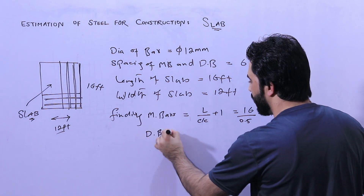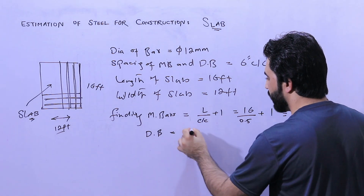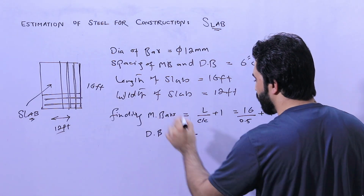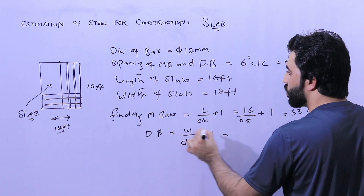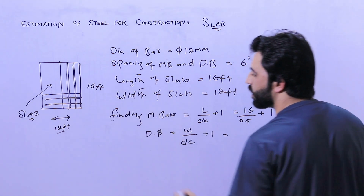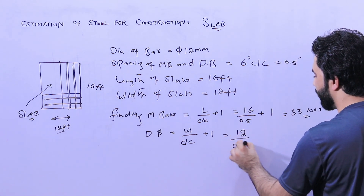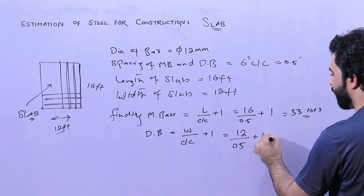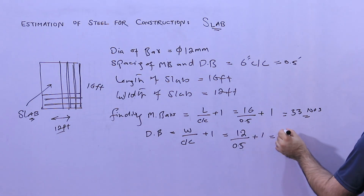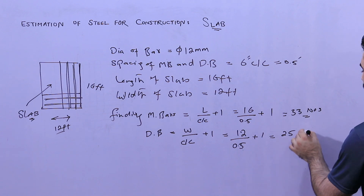For distribution bars, the formula is: Width divided by center-to-center spacing, plus one. The width is 12 feet, so: 12 feet divided by 0.5 feet equals 24, plus one gives us 25 numbers of distribution bars required.